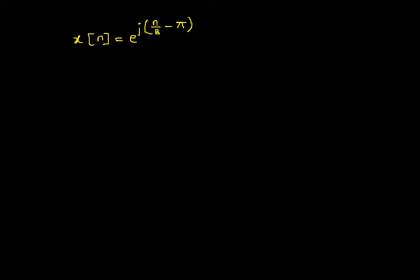Welcome to the video lecture on periodic and aperiodic signals. In this video we will consider a discrete time signal x of n equals e to the power j times bracket n by 8 minus pi.